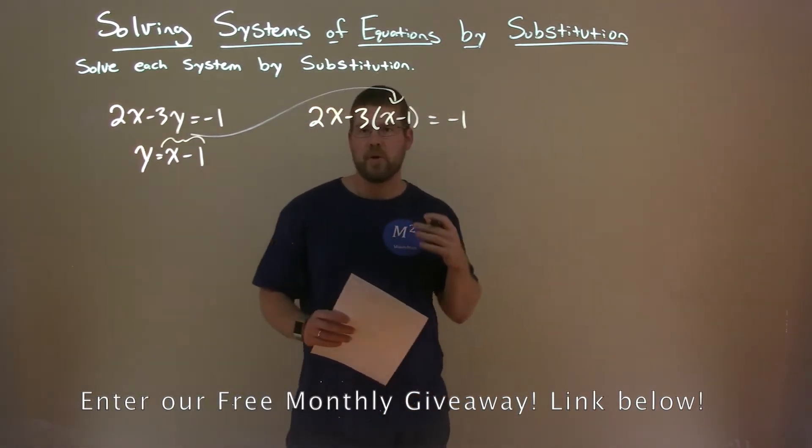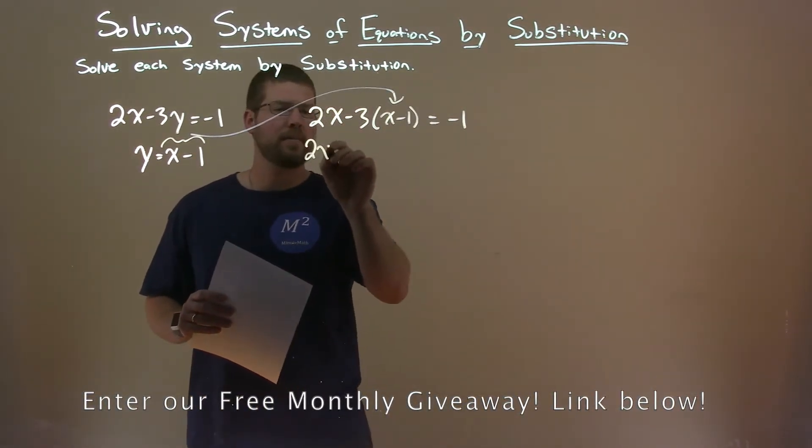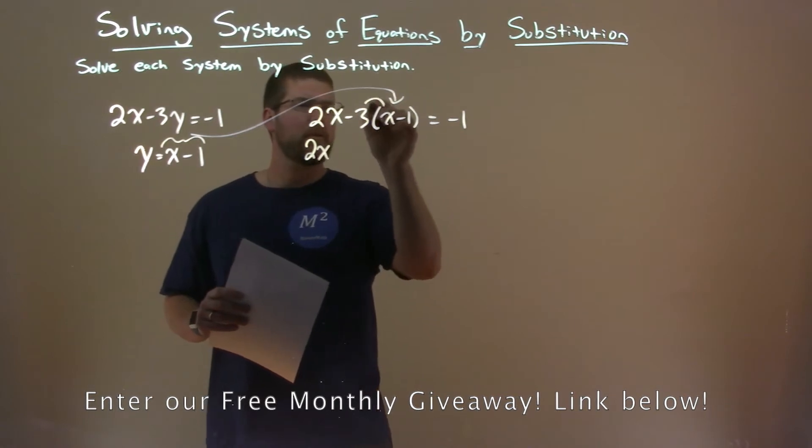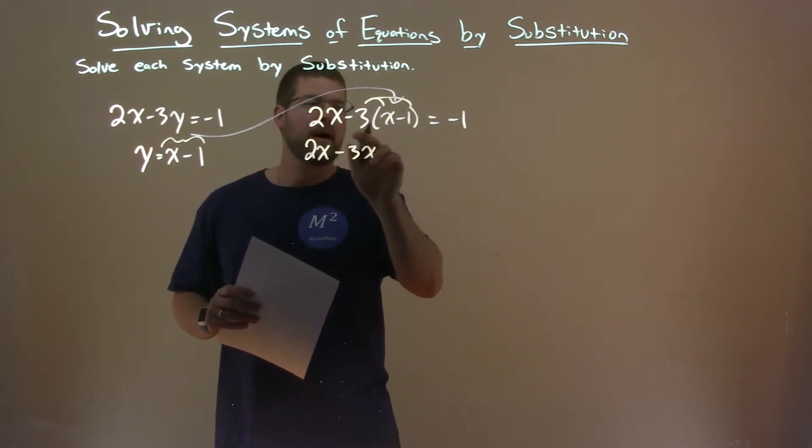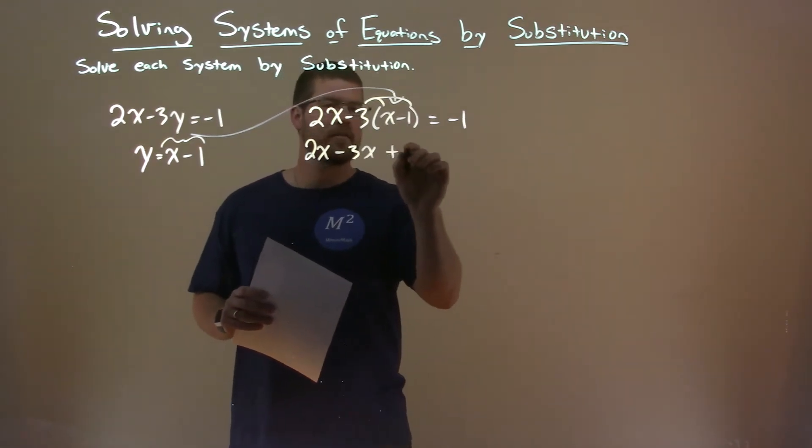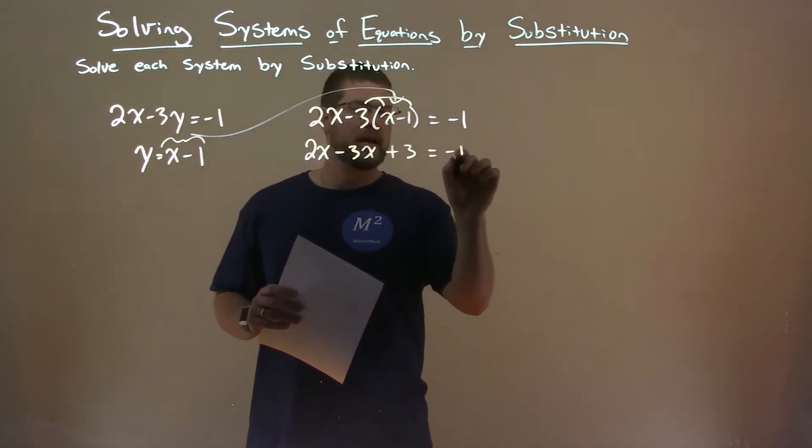Now we have to solve for x. 2x comes down, distribute the minus 3 to both parts. Minus 3 times x is minus 3x, minus 3 times minus 1 is a positive 3, equals a negative 1.